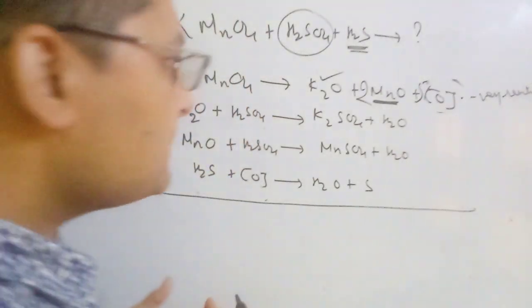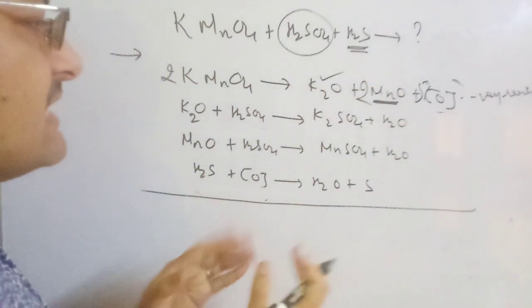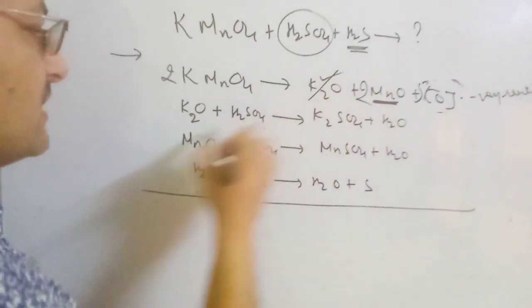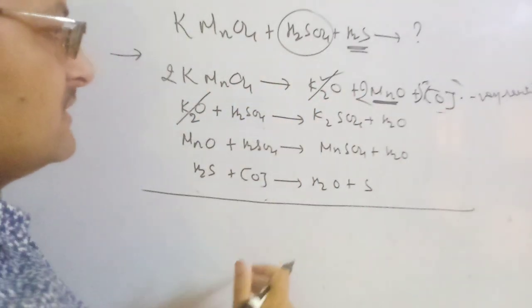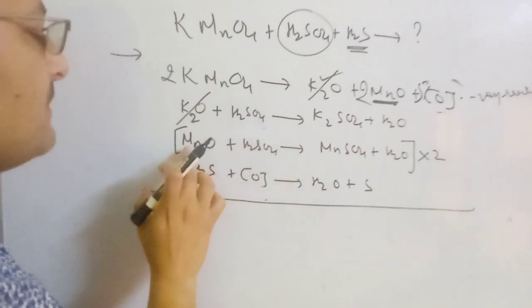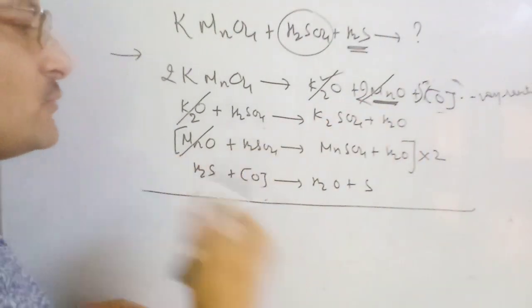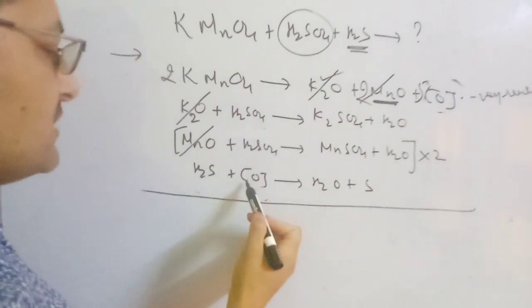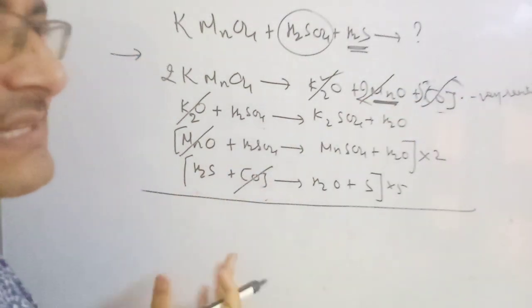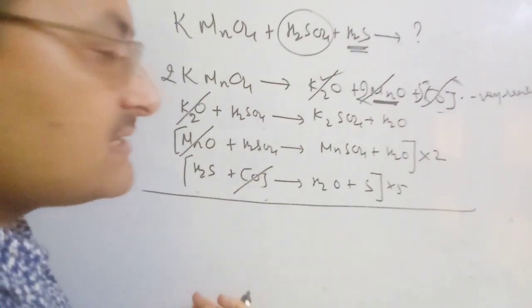Now we cancel the intermediaries. Nascent oxygen is not our final product — it is very reactive. Potassium oxide and manganese oxide are basic oxides that react with acid and cannot be final products, so they must be cut down. Potassium oxide on this side is cut with potassium oxide on the other side. There are 2 manganese oxides on one side and only 1 on the other, so you multiply the whole equation by 2. Similarly, multiply by 5 to cut down 5 manganese oxide on both sides.